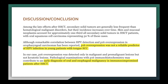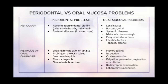For the discussion and conclusion: skin and mucosal neoplasms account for approximately one-third of all secondary solid tumors in HSCT patients, with oral squamous cell carcinoma representing 50% of these cases. P16 overexpression was not a reliable predictor of HPV infection in young patients with tongue SCC, although a remarkable correlation between HPV detection and P16 overexpression in oropharyngeal carcinoma has been reported. In this case, P16 overexpression was detected only in malignant and premalignant lesions but not in keratotic lesions. Pathological examination with P16 immunohistochemistry may contribute to early diagnosis of oral and esophageal malignancy in immunocompromised patients after HSCT.